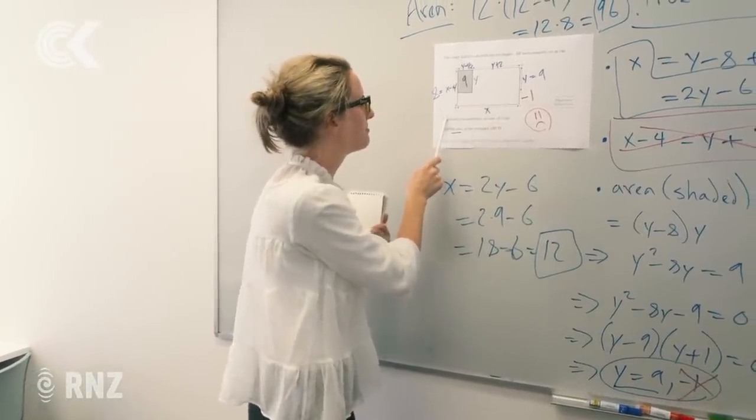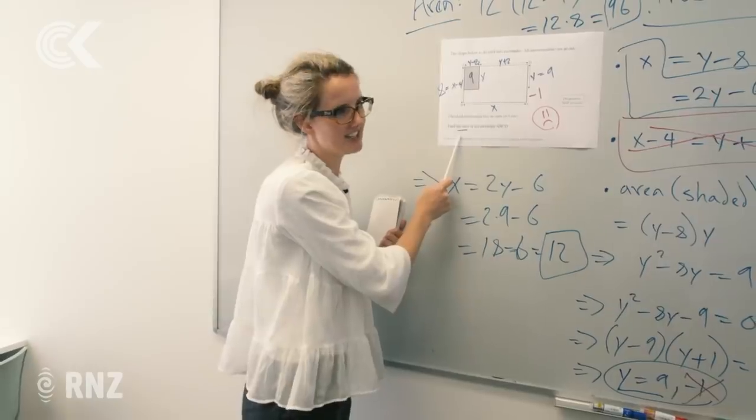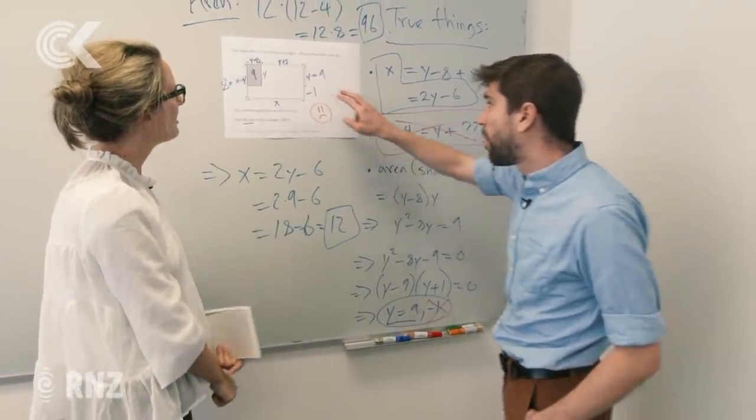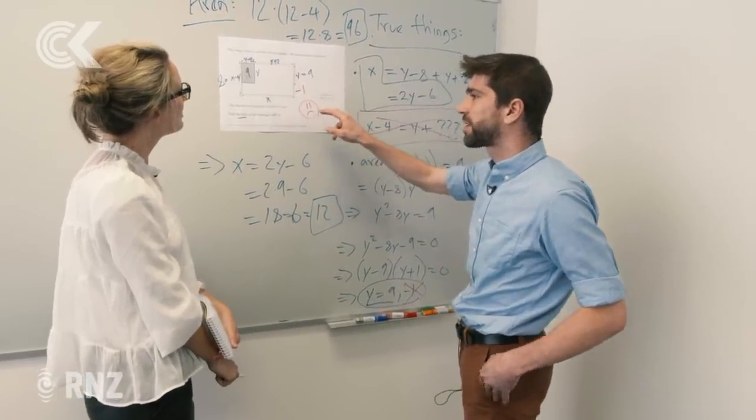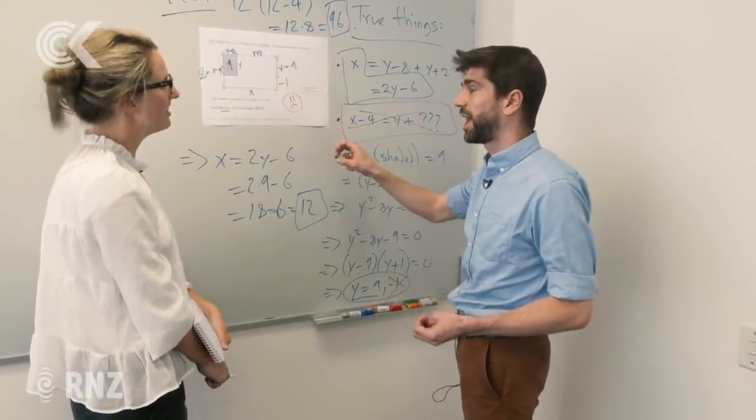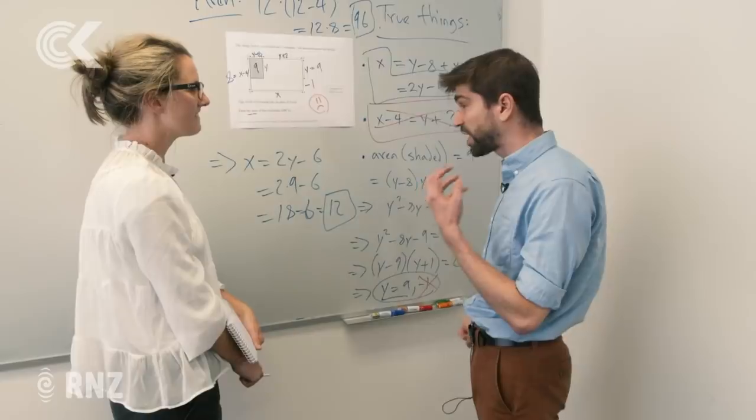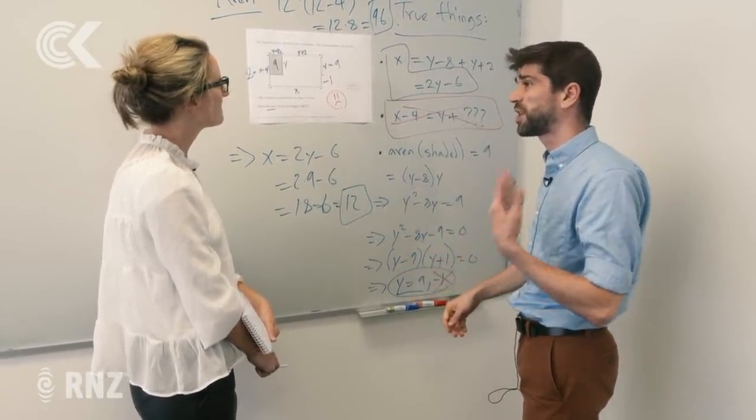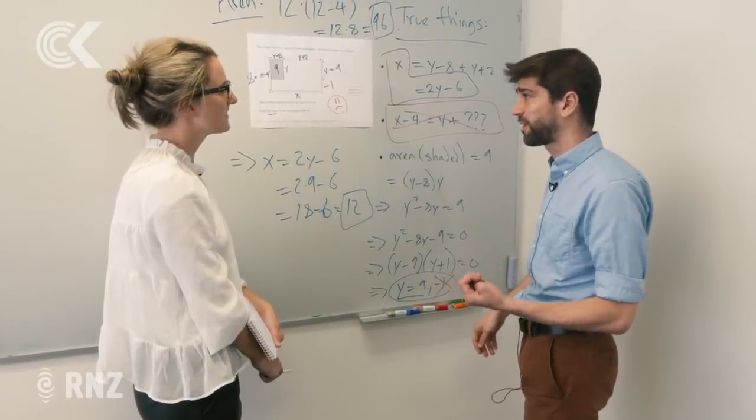When you first come across this problem, does it seem hideously hard? It has two things that are fishhooks. One is that when you solve the problem, you get something that's geometrically impossible, and that is going to be a fishhook for really clever kids. They're going to try to solve the problem, they're going to be like, oh wait, this is impossible, and then going back and recheck their working three or four times. That's rough on them.